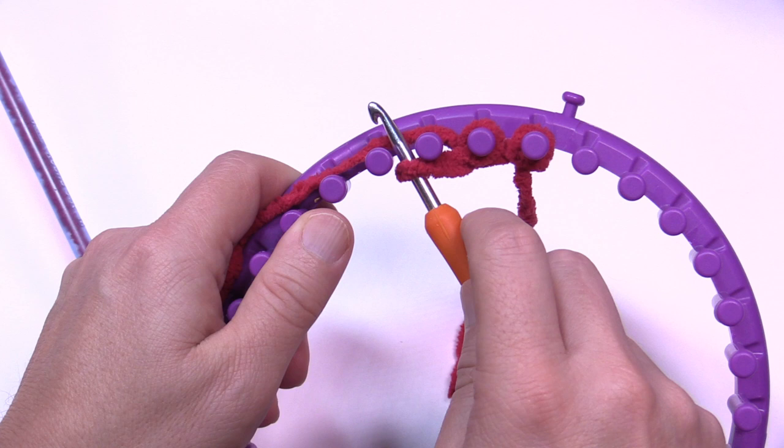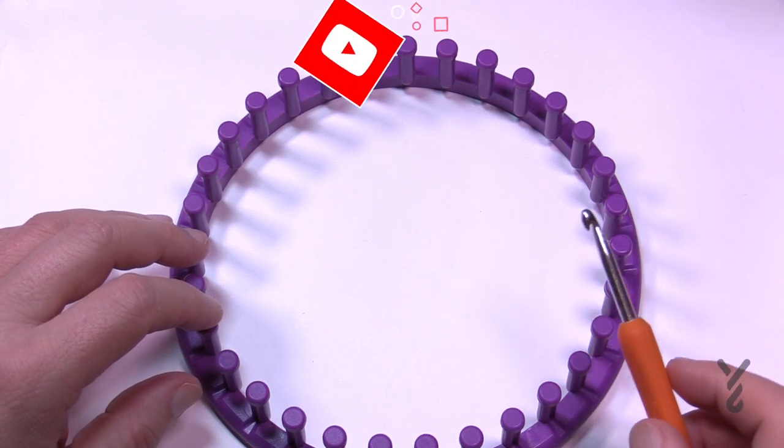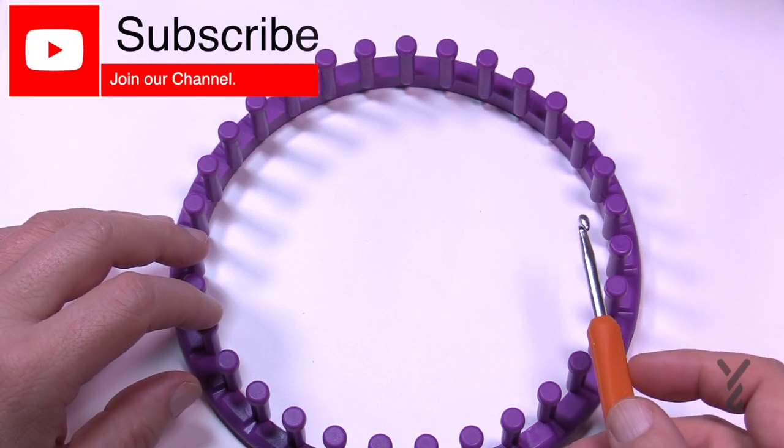Welcome back to The Crochet Crowd as well as yarnspirations.com. Today I'm going to show you how to cast onto a loom using a crochet hook. It's called a chain cast on.